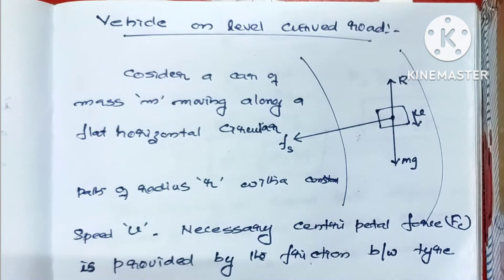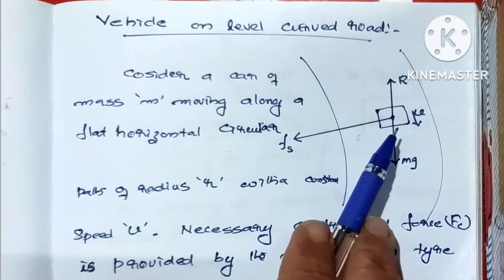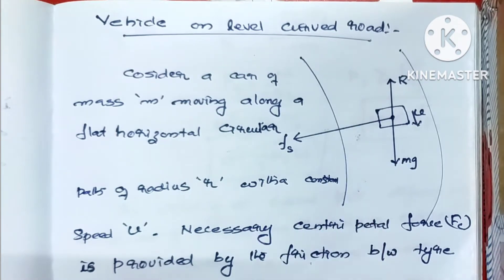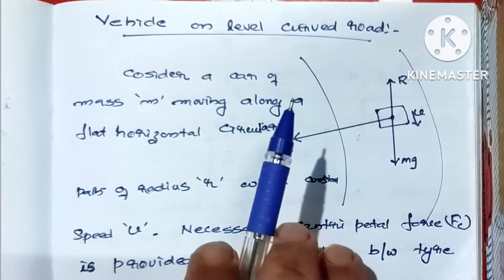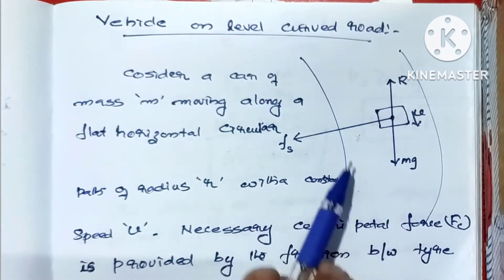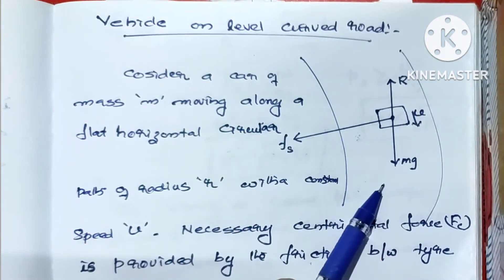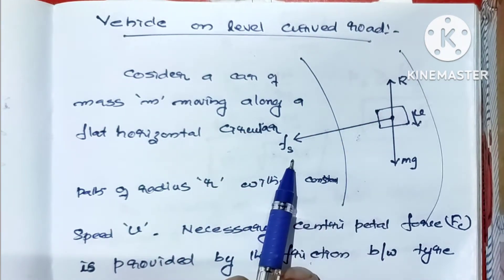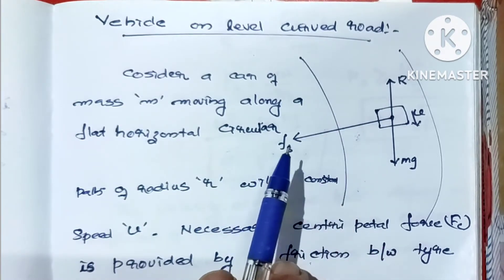The centripetal force in circular motion is the same. The centripetal force is the turning of the road — it is a friction force. The centripetal force is related to the turning. There is a centripetal force; without turning, there is no centripetal force.